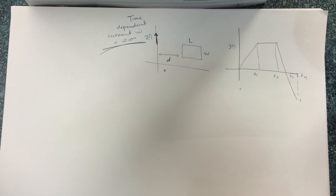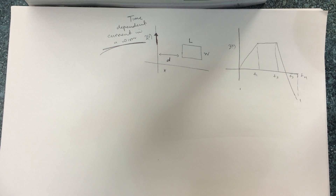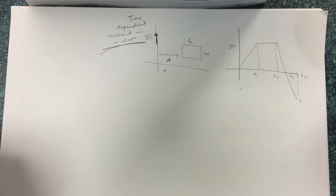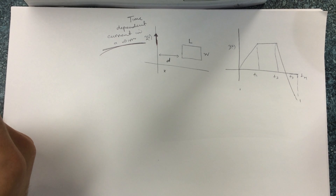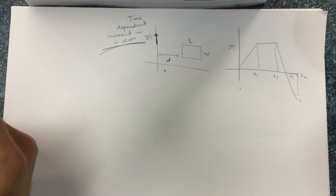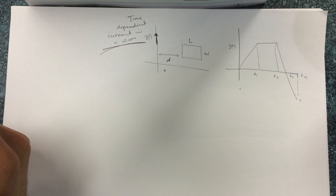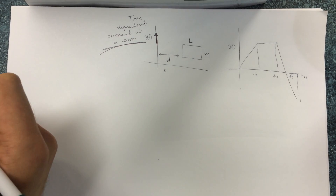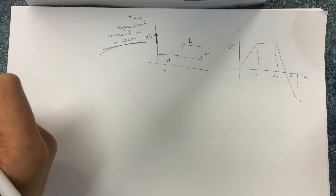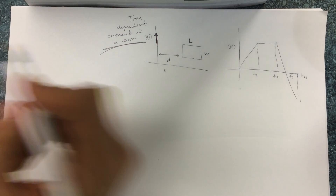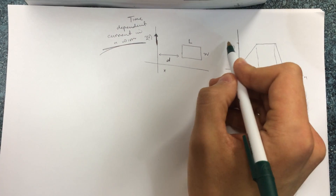The first question is asking: what is the flux through the loop at time equal to 12? So if you notice here, they gave me a specific time. At that specific time, I know the current — they gave it to me on the graph. You can see it right here.